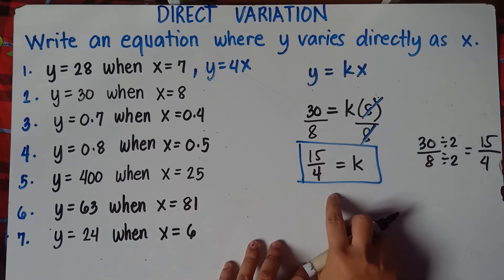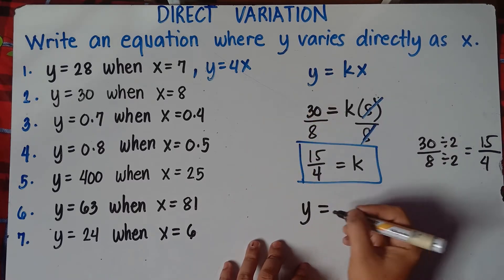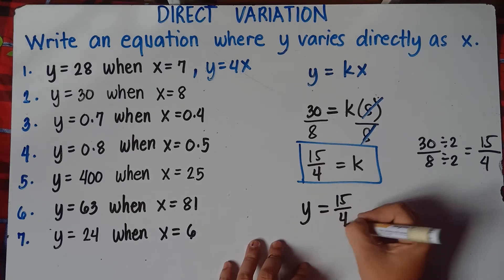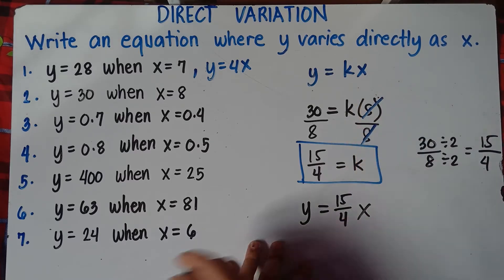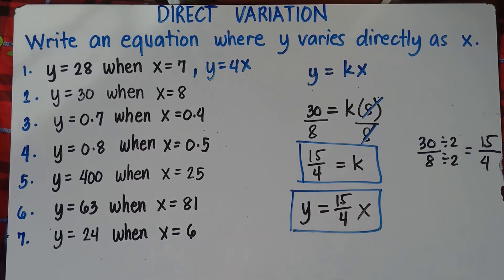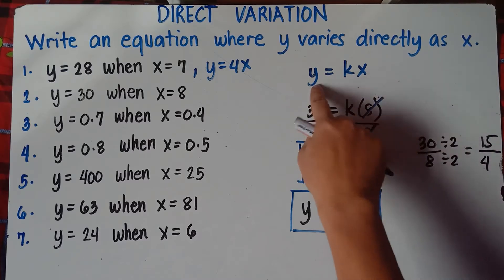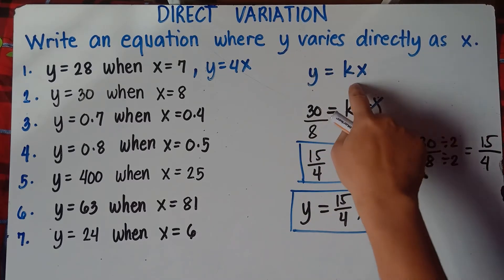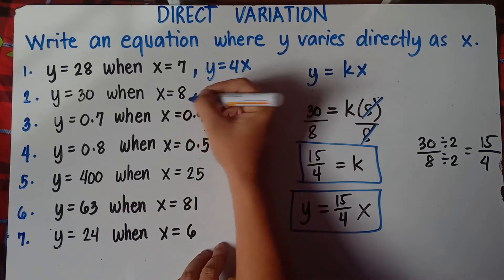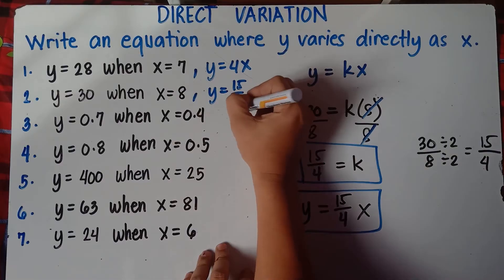Once you get k, simply substitute k from this equation. So copy y, y equals your k which is 15 over 4, then copy x. That's your equation — that's the answer for number 2: y equals 15 over 4 x.